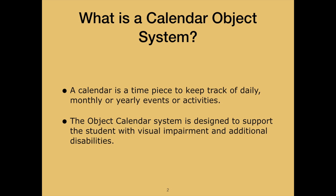Typically calendars are visual in nature, but not everyone can access a visual calendar system. So I would like to introduce you to the object calendar system developed by Dr. Jan Van Dyke for students who are deafblind. Think of the visual schedules often provided in schools for students with additional disabilities — those visual schedules often contain pictures that a student with a visual impairment may not see effectively. The object calendar system is basically replacing those pictures with objects, but provides guidance on the careful selection of objects to meet the needs of an actual learner. I hope this presentation will assist your team in developing an effective object calendar system for your student.